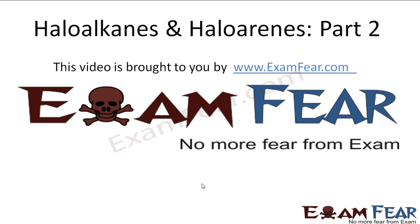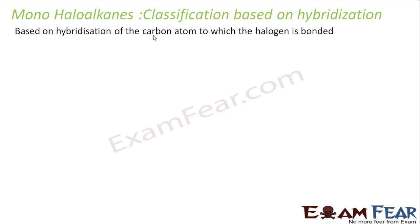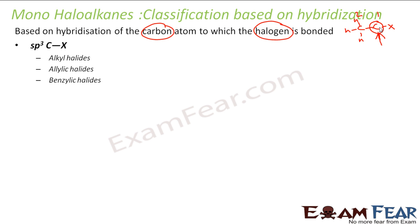Hello friends, this video on haloalkenes and haloarenes part 2 is brought to you by examfear.com. We classify haloalkanes based on the hybridization of the carbon atom to which the halogen is bonded. For example, if I have a carbon with a halogen attached, I look at the hybridization of that carbon — let's call it carbon 1.